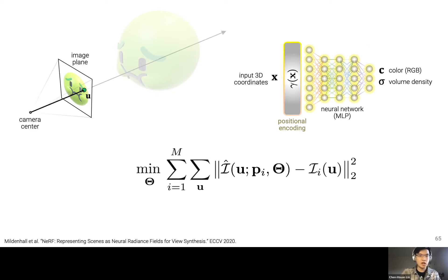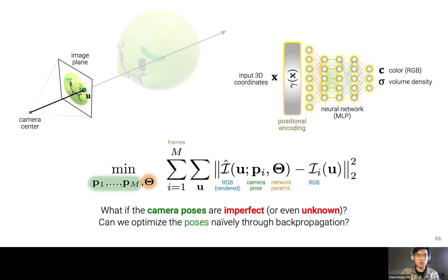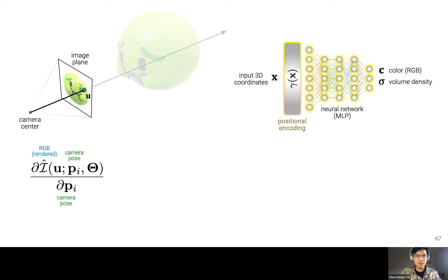The NeRF objective is an L2 loss between rendered and observed RGB pixel intensities, optimized over all viewpoints, with the learnable parameters being the network weights theta. But what if camera poses are imperfect or even unknown? If camera poses are inaccurate, volume rendering doesn't make much sense. Can we just optimize camera pose parameters naively through backpropagation? It turns out it's not that simple.